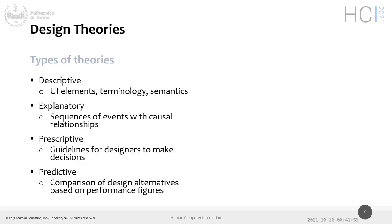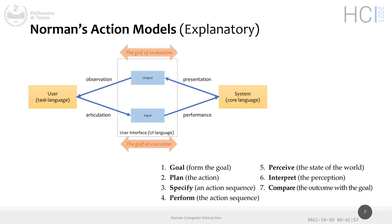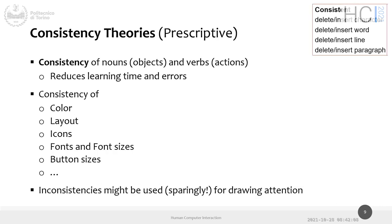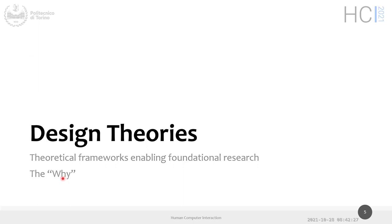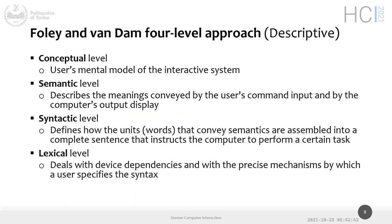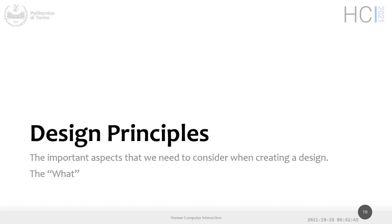I'll skip theories since they are more about how humans think — we already discussed Norman's model in the first week. Design theories help us understand the 'why': why is the human behaving this way, why do we need to be careful about color contrast? That's because the human vision system behaves in a given way. Design principles tell us the 'what' — what things we need to be careful about.